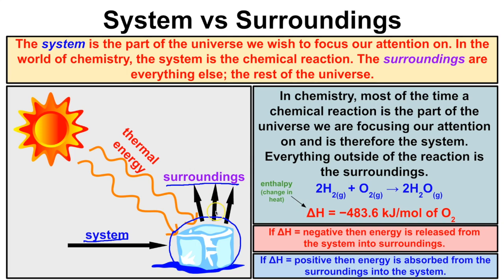When we start talking about energy transfers — whether a system is absorbing or releasing energy — we can do so in terms of heat either leaving or coming into the system. In this example where we toss a piece of ice out into the street on a hot sunny day, this ice cube is going to melt because it's going to absorb thermal energy from the sun. The system is absorbing thermal energy or heat from the surroundings.